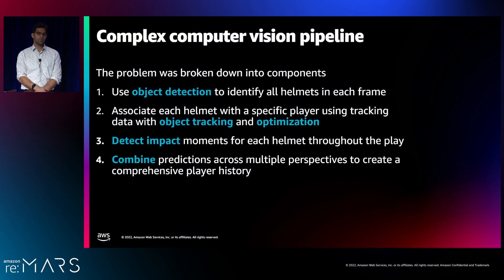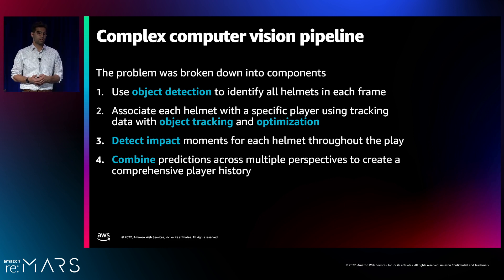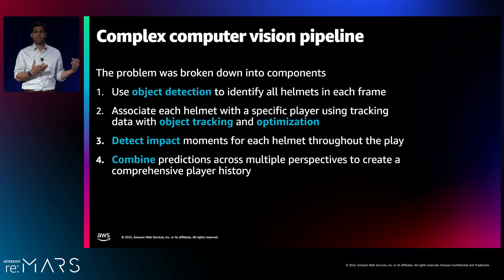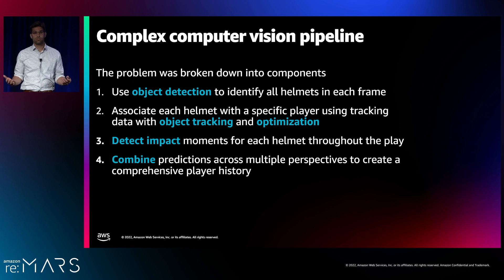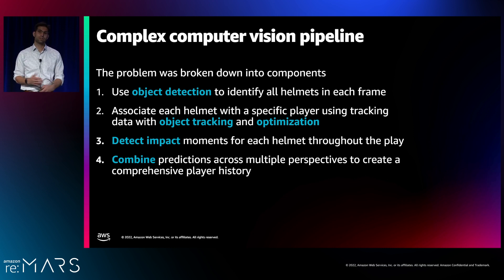This is a pretty complex computer vision pipeline broken down into a few components. First is object detection — identifying all the helmets in every frame of every video. Then we use a process to track each helmet and assign them to the correct players using optimization. Third, we detect when the impact occurs on each helmet. Finally, we combine different views because we have multiple camera angles of the same plays to get a single comprehensive player history of helmet impacts through an entire season.